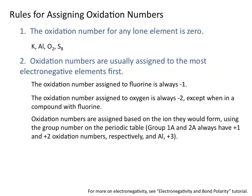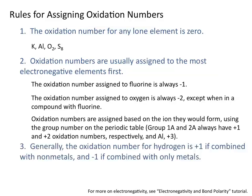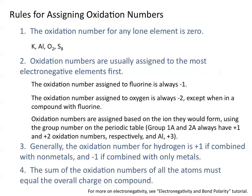Elements in group 1A and 2A would have oxidation numbers of plus 1 and plus 2, respectively. And aluminum is assigned an oxidation number of plus 3. Generally, the oxidation number for hydrogen is plus 1 if combined with non-metals and minus 1 if combined with only metals. And lastly, the sum of the oxidation numbers of all the atoms must equal the overall charge on the compound.